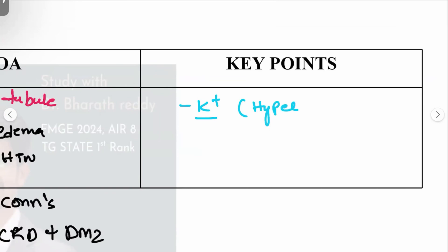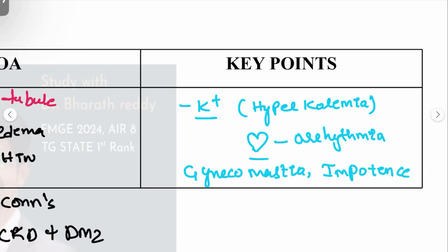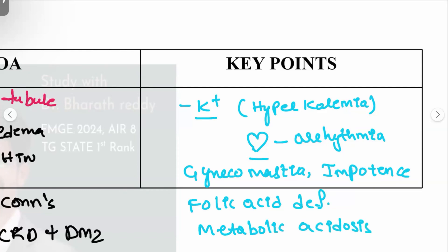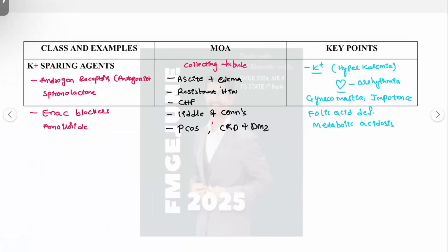Side effects of potassium-sparing diuretics: they cause hyperkalemia, which can trigger cardiac arrhythmias. Spironolactone can also cause gynecomastia and impotence, as it blocks androgen receptors. Folic acid deficiency and metabolic acidosis are also seen with spironolactone.